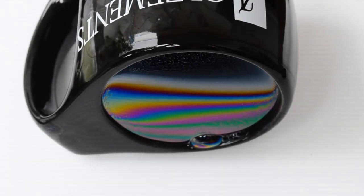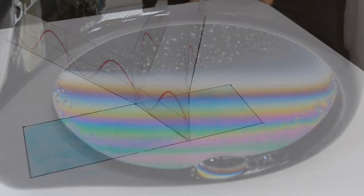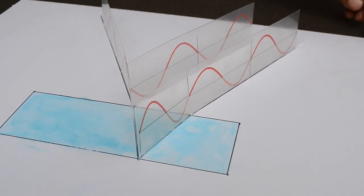These beautiful color bands are the result of thin film interference. Let us understand more about this phenomenon with the help of a model.